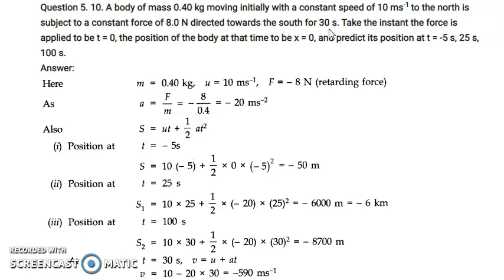The position of the body at t = 0 is taken as the initial point, so position is 0 and time is 0. We need to predict its position at t = −5 seconds, t = 25 seconds, and t = 100 seconds.